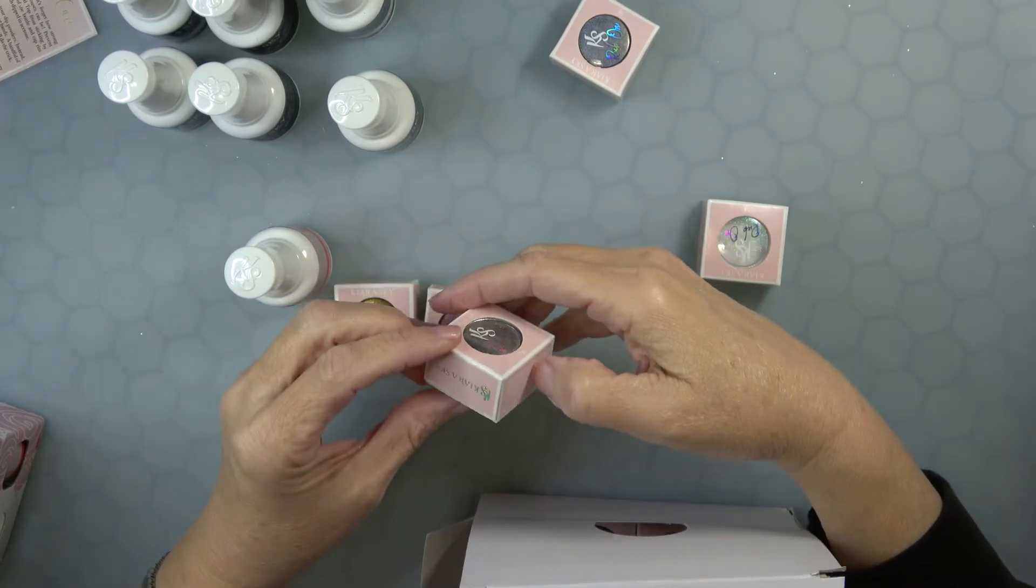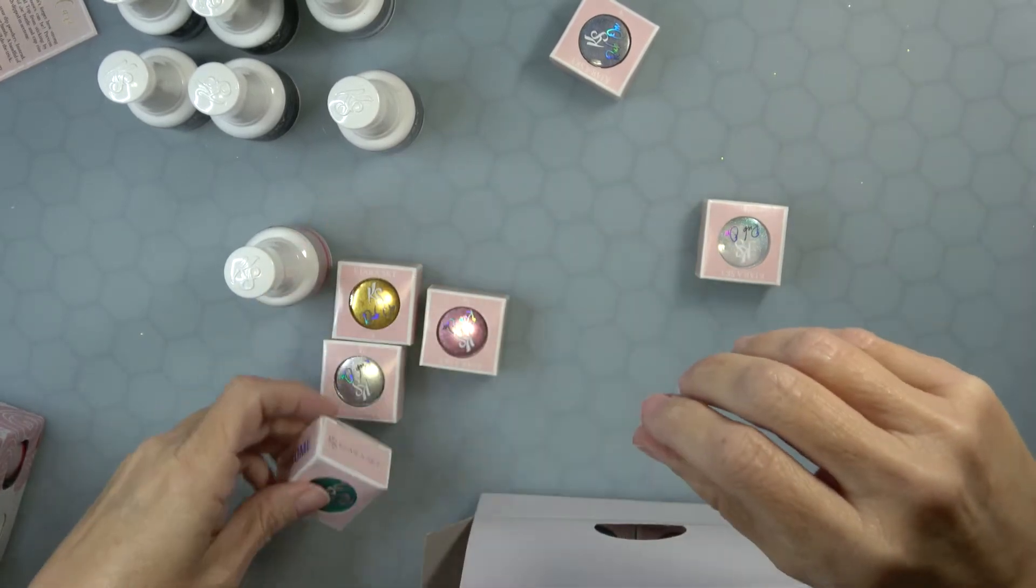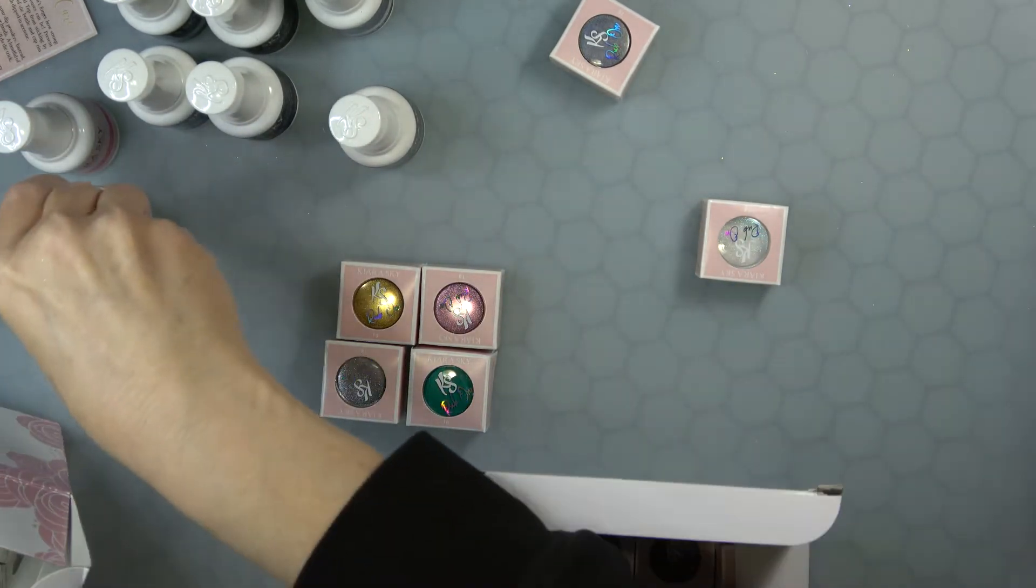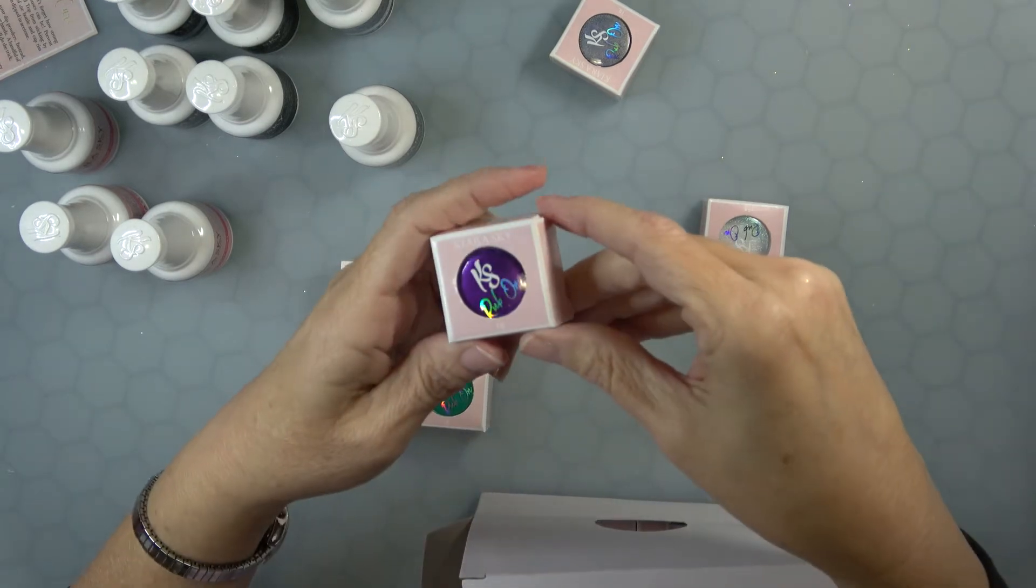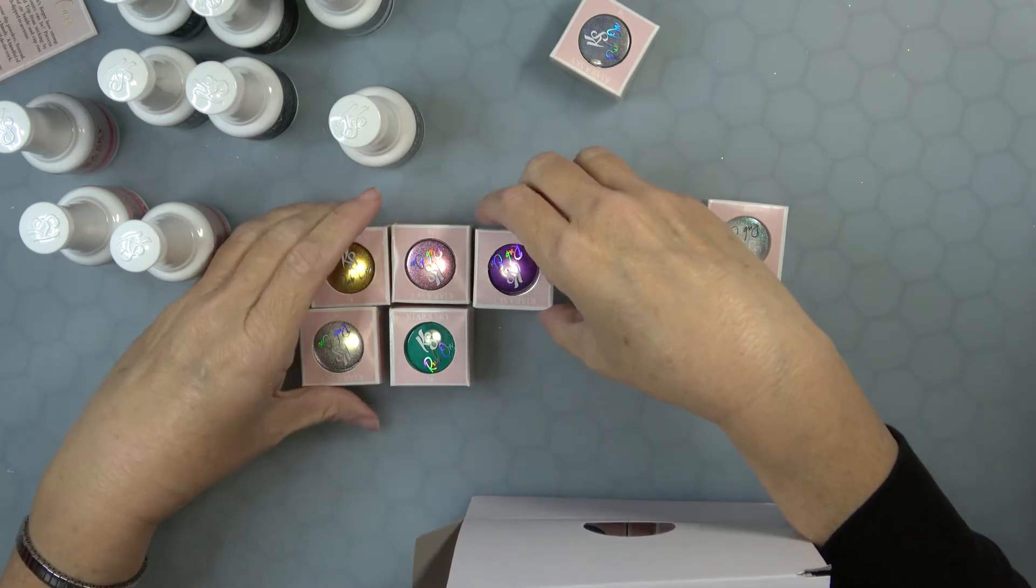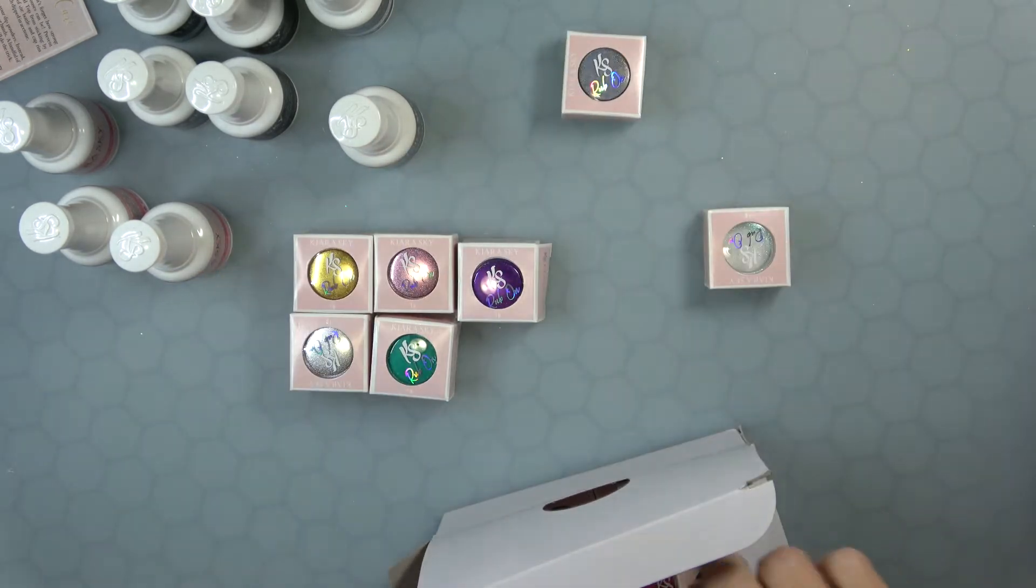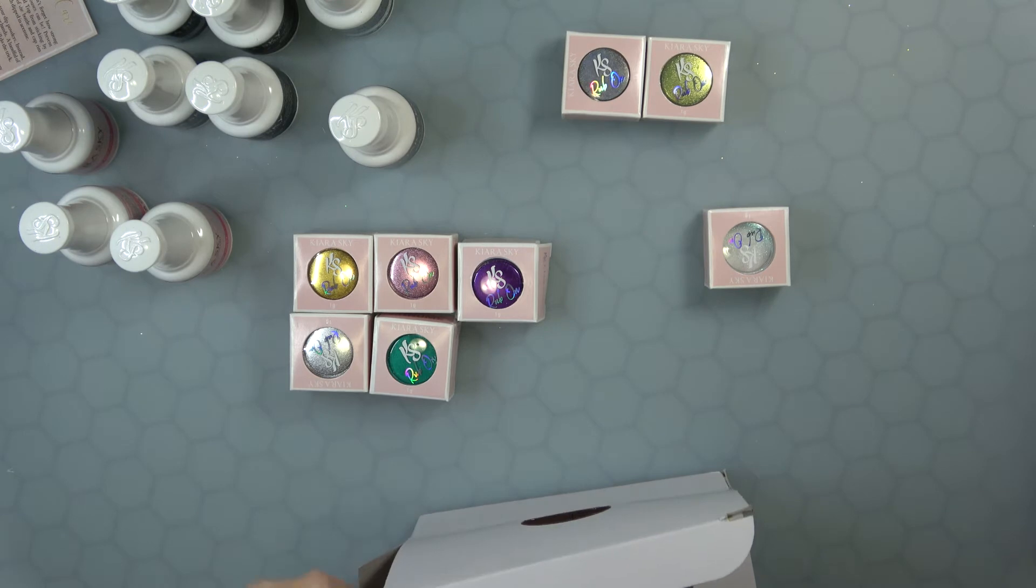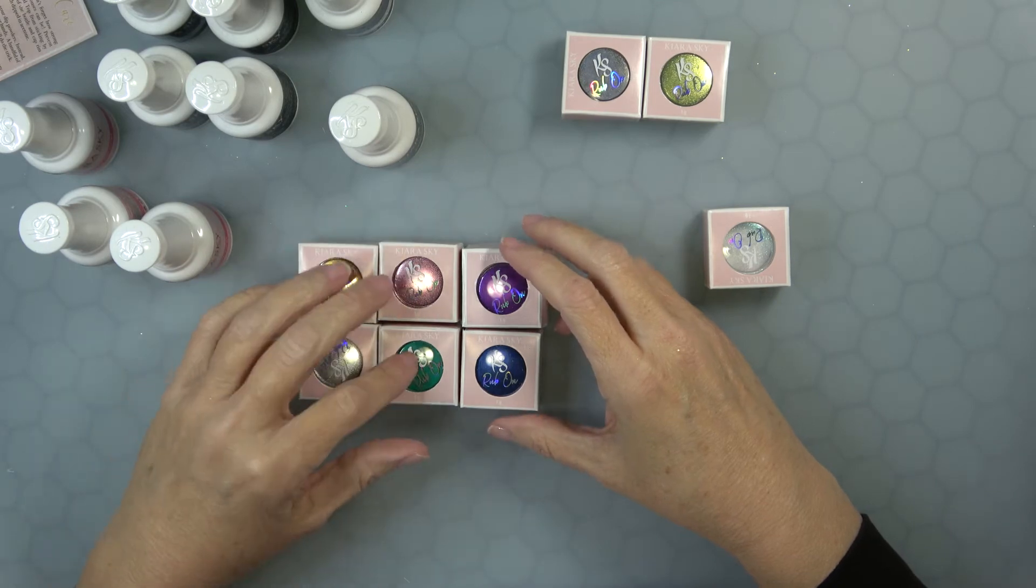All of these are rub-on powders. This one is a chrome, so we put this with the chrome. We have another chrome here, green. I'll take you out of your packaging for now so that we can show you everything. Wow, this one's beautiful. I don't know if you can see that, it's purple. I'm going to try to zoom in on these colors. This is a chrome. These are chromes, these are the hollows, and that's the mermaid. This one is a hollow, gold. This one is another chrome. So I've got gold, silver, pink, and green, purple, and blue.